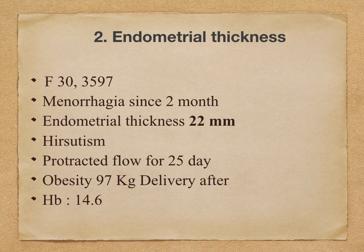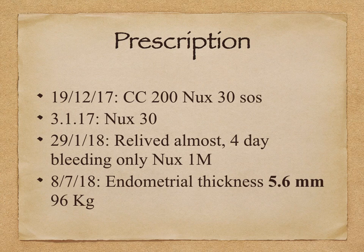Always remember, in almost all types of menstrual irregularities, we have to check the hemoglobin count also. Now the prescription in this case: initially we prescribed the remedy Calcarea carb 200, one dose. And if there is severe bleeding, in order to arrest that bleeding, we prescribed Nux vomica 30 also as an SOS remedy. Nux vomica is an important remedy mentioned in Materia Medica Pura by Dr. Samuel Hahnemann for menorrhagia in order to arrest the flow.